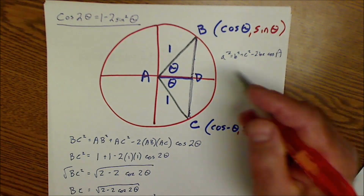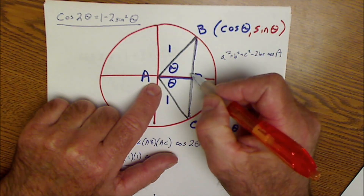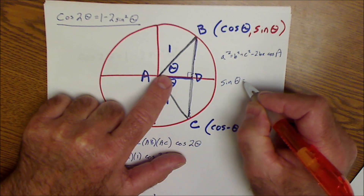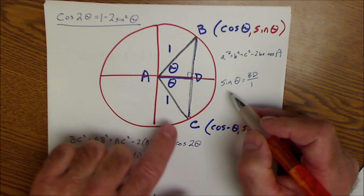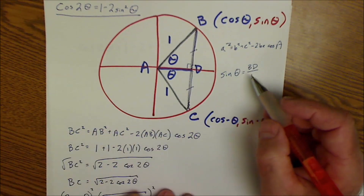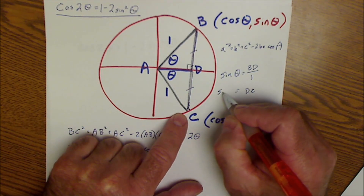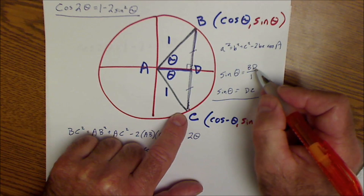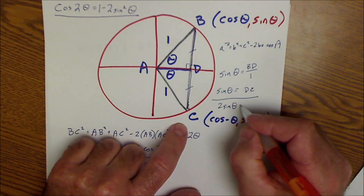Going back up to the circle, I can see that sine of θ — looking at just this one right triangle — sine of θ equals bd over 1, so bd equals sine of θ. I can see that dc and bd are equal, so if bd equals sine of θ, then dc also equals sine of θ. Therefore bd plus dc equals 2 sine of θ, which means bc equals 2 sine of θ.